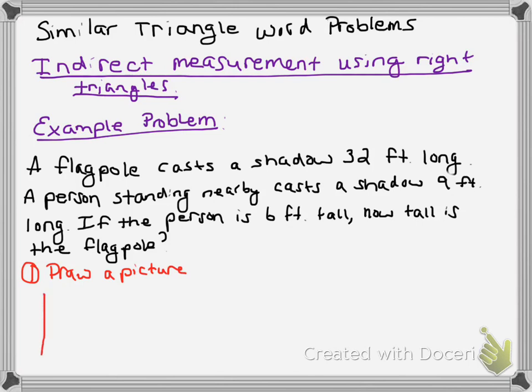So I've got a flagpole. I'm even going to put me a little flag up here. And it casts a shadow 32 feet long. Where's the shadow at? When you're standing outside, where is your shadow? Your shadow is on the ground. So the flagpole and the shadow make what type of a triangle? A right triangle.